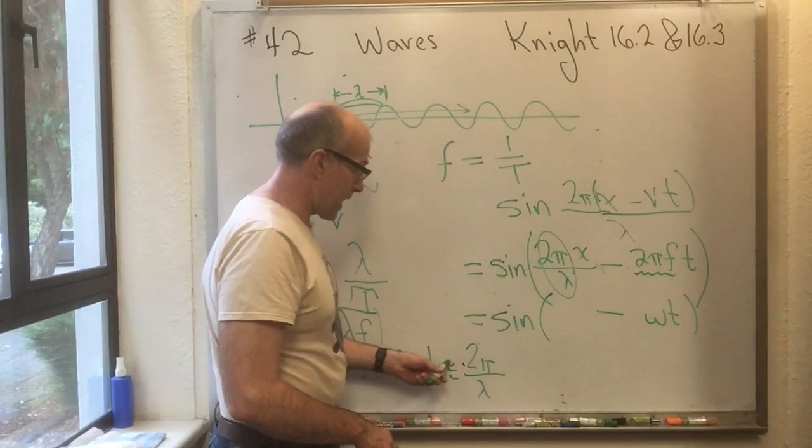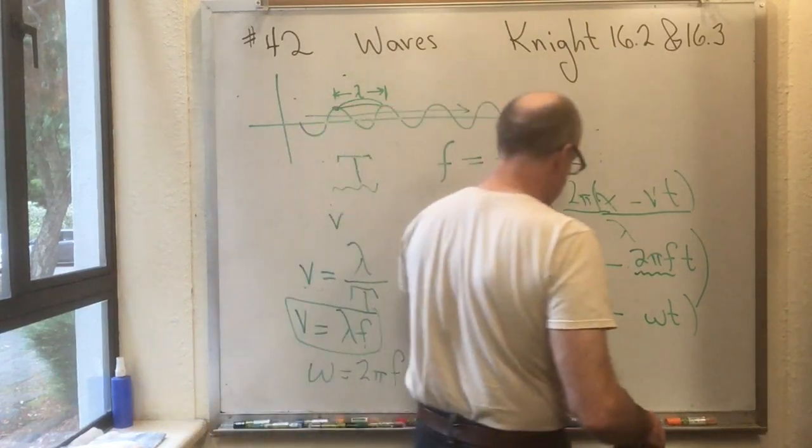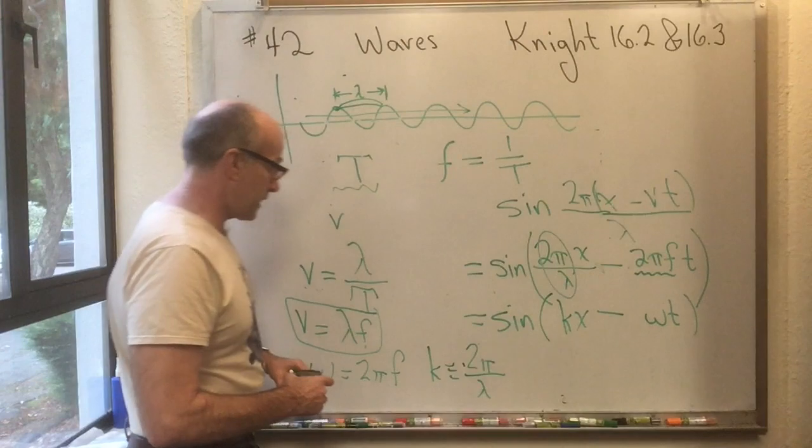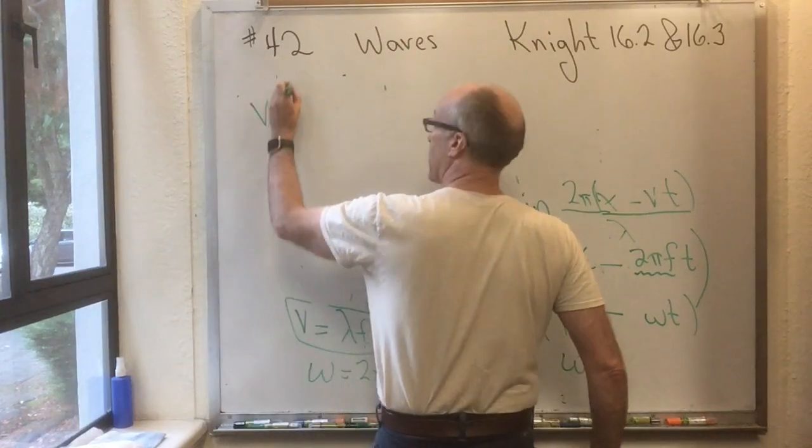And if we define this new thing K, which is 2 pi over lambda, then we can write this as KX minus omega T. We have V equals lambda F, which is V equals lambda over 2 pi times 2 pi F.